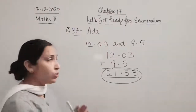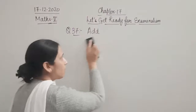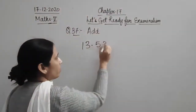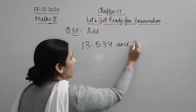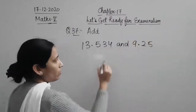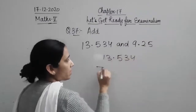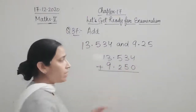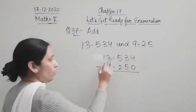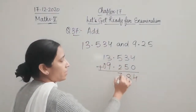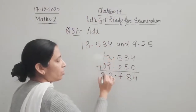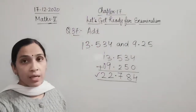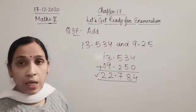Addition of decimals is the same as normal addition. Let's take one more example: 13.534 plus 9.25. Arrange with decimal below decimal. Wherever you do not have a number, put a zero. Working through: 4, 8, 7, then carry gives 22.784. So 22.784 is the answer for question number 37.